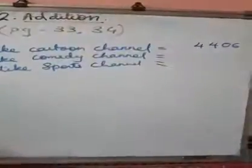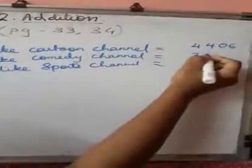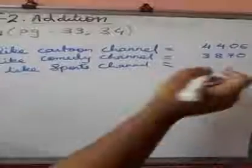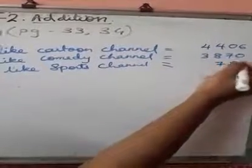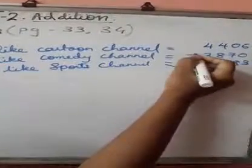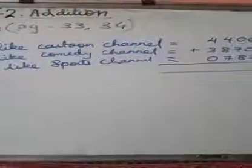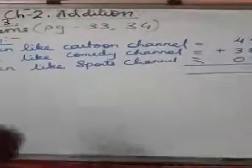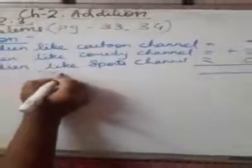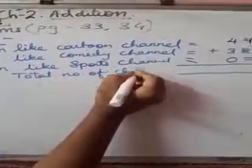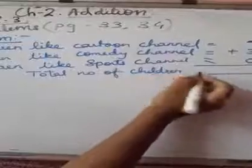Next is 3,870, and next is only 783. See, it is a three digit number, so arrange it properly. What am I going to get? How many children like to watch these three channels? So we are going to get total number of children.